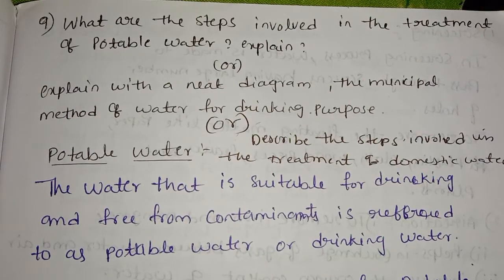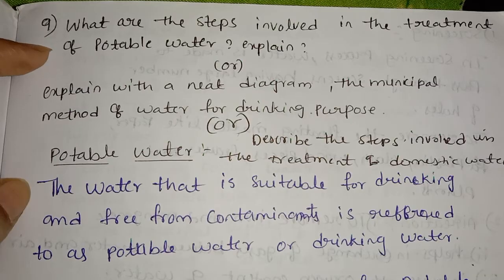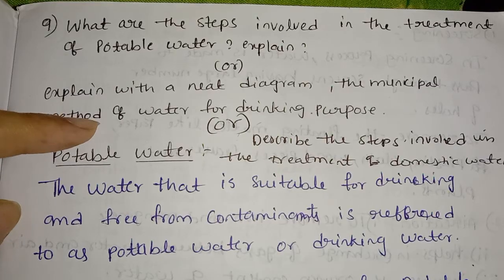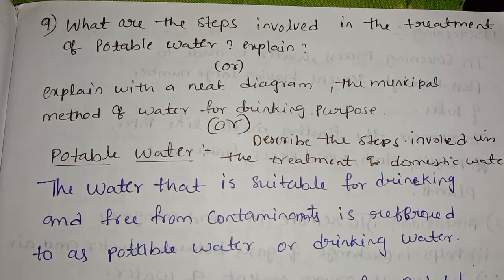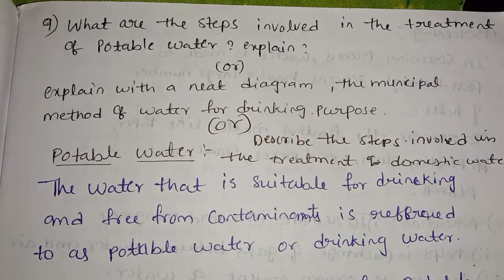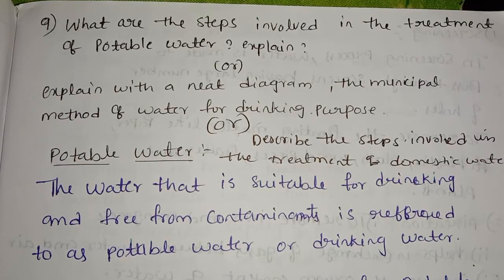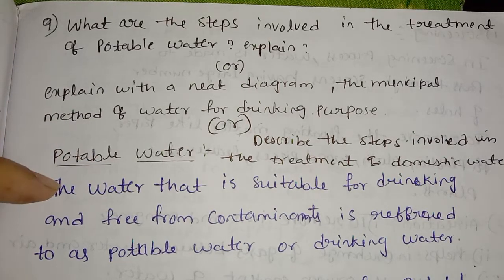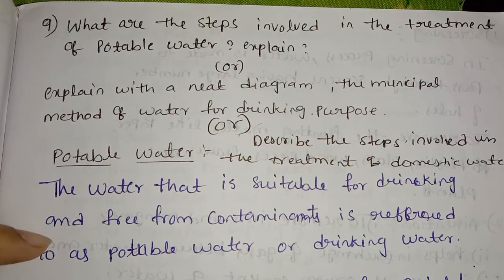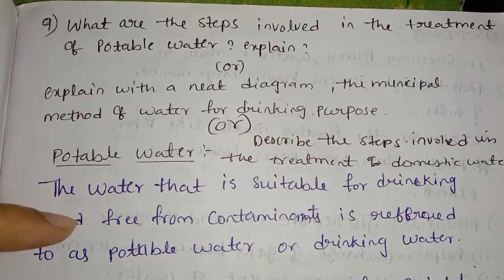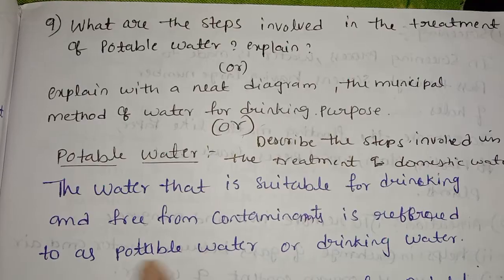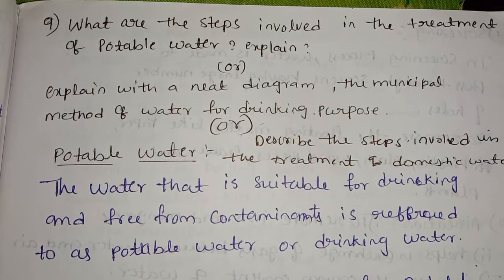I will discuss: what are the steps involved in the treatment of potable water? Explain with a diagram the municipal method of water treatment for drinking purpose. Describe the steps involved in the treatment of domestic water. The water that is suitable for drinking and free from contaminants is referred to as potable water or drinking water.